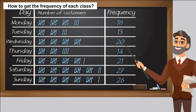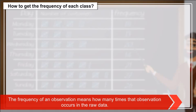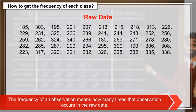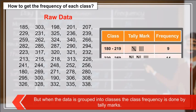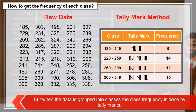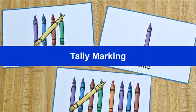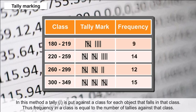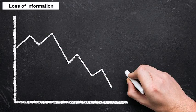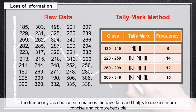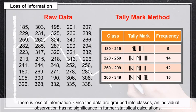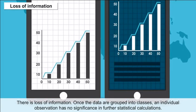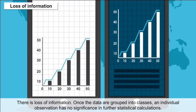The frequency of an observation means how many times that observation occurs in the raw data. When data is grouped into classes, class frequency is determined by tally marks. In tally marking, a tally is put against a class for each object that falls in that class, so frequency in a class equals the number of tallies against it. Loss of information: once data are grouped into classes, individual observations have no significance in further statistical calculations.